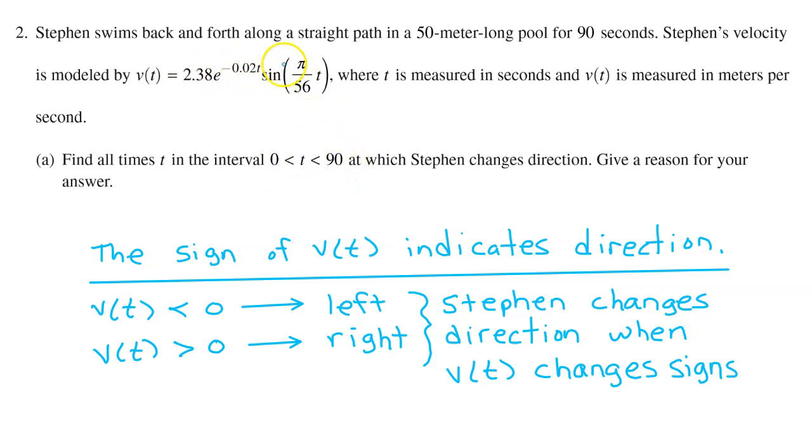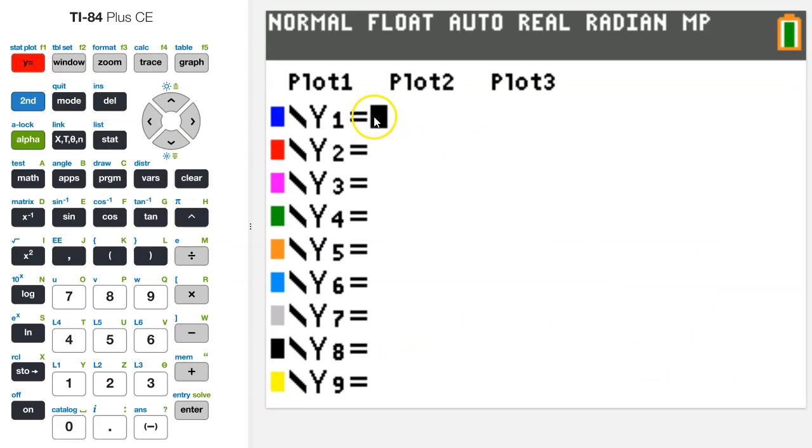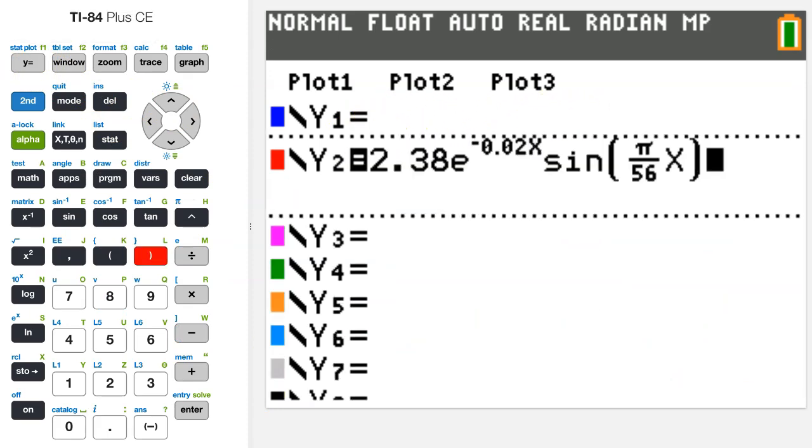Let's start by typing this equation into the calculator as y1. So go to the calculator, hit y equals, and we're just going to type in the equation right here. So I've typed the velocity function in as y2, actually, because on a position velocity acceleration problem, I always like to let y1 be position, y2 be velocity, and I save y3 for acceleration.